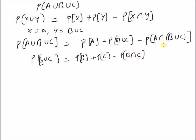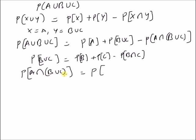Now, the only term that is unknown is probability of A intersection (B union C). By using the distributive law of set theory, we can write that probability of A intersection (B union C) is equal to probability of (A intersection B) union (A intersection C).